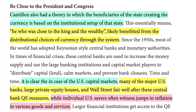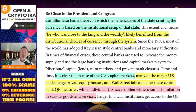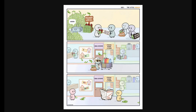There was also another theory by Cantillon: the beneficiaries of the state creating currency are based on the institutional setup of that state — meaning he who was close to the king and the wealthy likely benefited from the distributed choices of currency in the system. In the case of U.S. capital markets, many of the major U.S. banks, large private equity houses, and Wall Street fare far better after central bank QE — quantitative easing or money printing — while individual U.S. savers often witness jumps in inflation in various goods and services. The Cantillon Effect is here in plain sight: the money printer goes brr, the Fed or Treasury gives out money to big banks and people at the very top of the food chain.